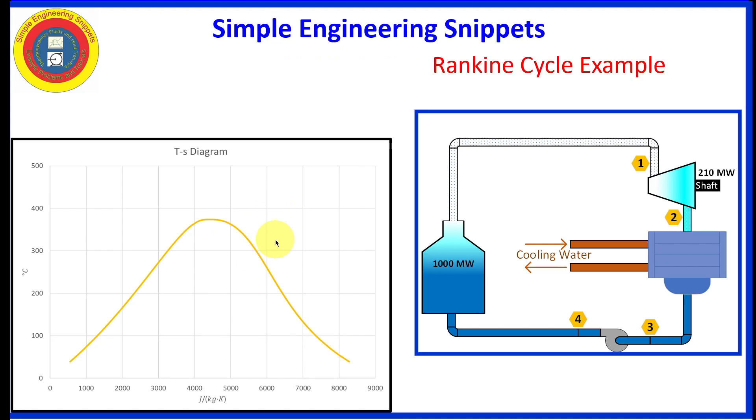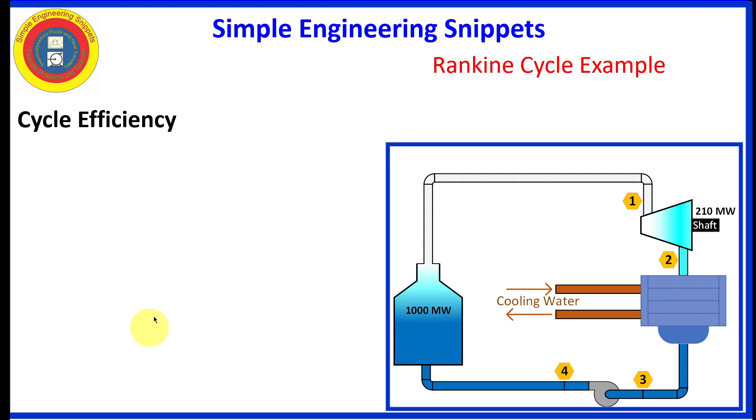We'll also be referring to a temperature entropy diagram. And let's go ahead and add our 5000 kilopascal isobar and our 15 kilopascal isobar. And we already know enough information about the inlet to the turbine point one to add that point. And point three, we have enough information to add that.